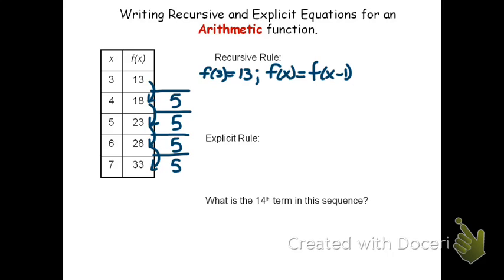In this case, we see that we have a first difference of 5, so after that f of x minus 1, we put plus 5. And that is the recursive rule. Any term is the previous plus 5.